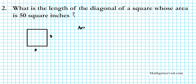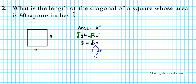The formula for the area of a square is S squared. If the area is 50 square inches, then S squared equals 50. To find the measure of one side, we take the square root of both sides, giving us S equals the square root of 50. Simplifying: 50 = 25 × 2, and the square root of 25 is 5, so S equals 5 root 2. All four sides measure 5 root 2.